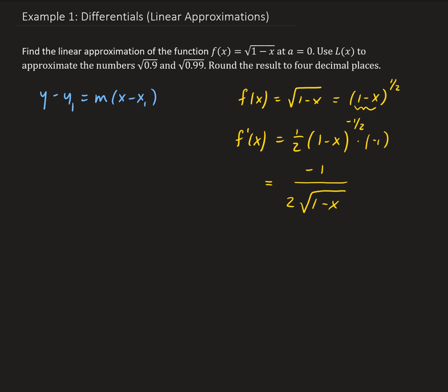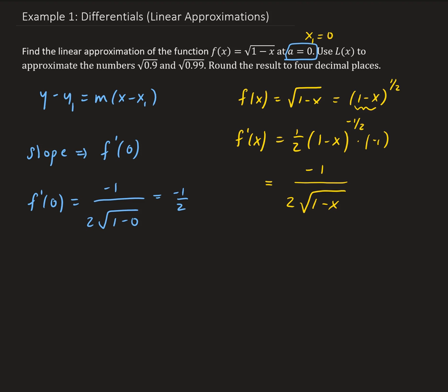The slope is going to be attained by evaluating our derivative at 0. So f prime of 0 is going to give us minus 1 over 2 times the square root of 1 minus 0, and that gives us a value of minus one half. So x1 is just 0, and if we evaluate the function at 0, that gives us the corresponding y value — the square root of 1 minus 0, which is 1. So that's what we use for y1.